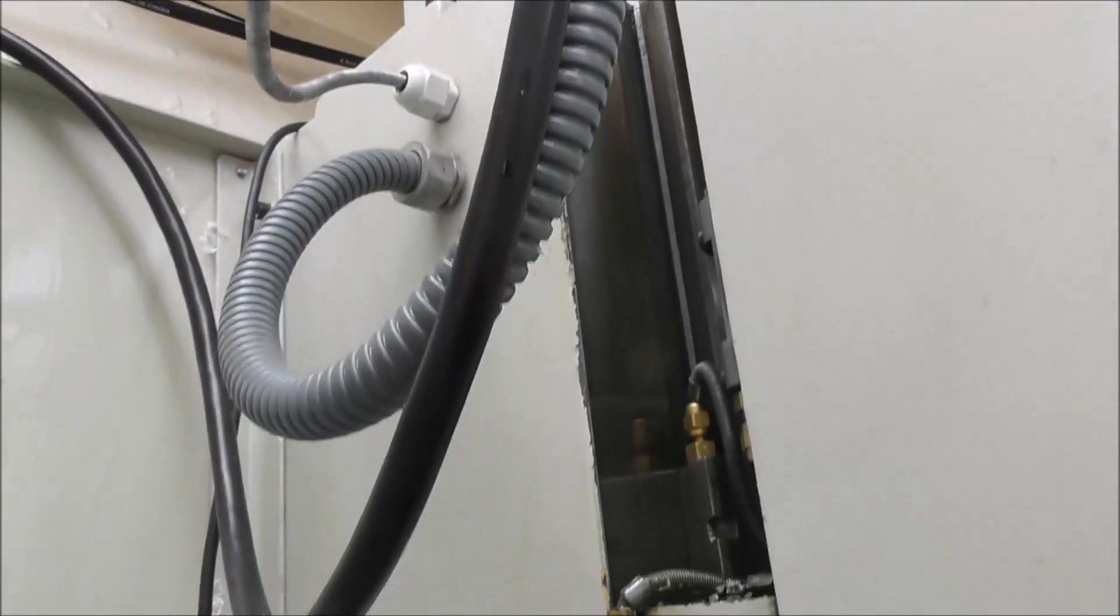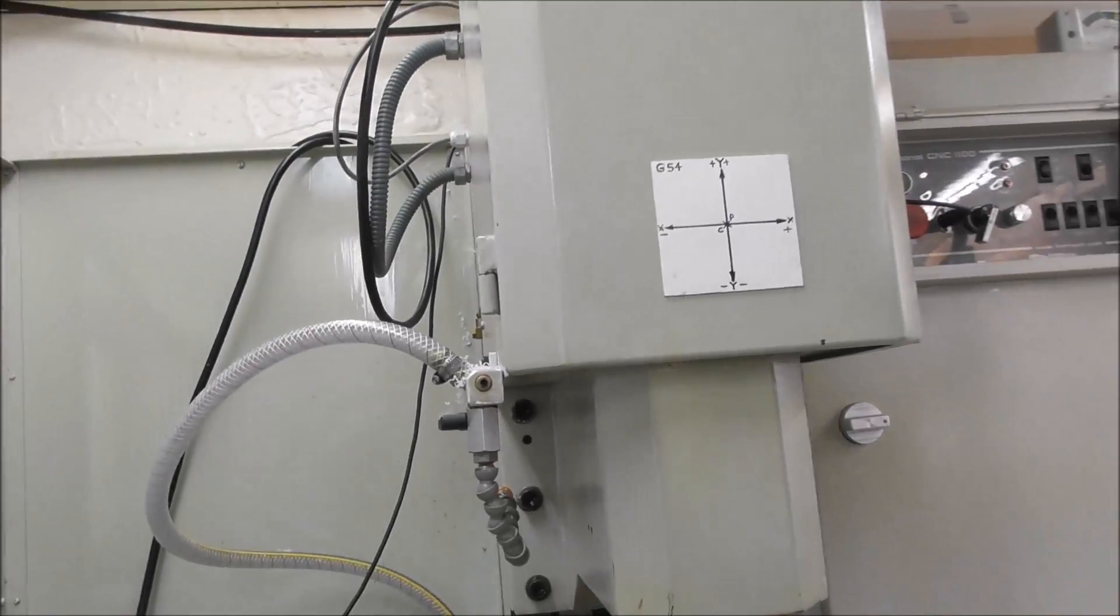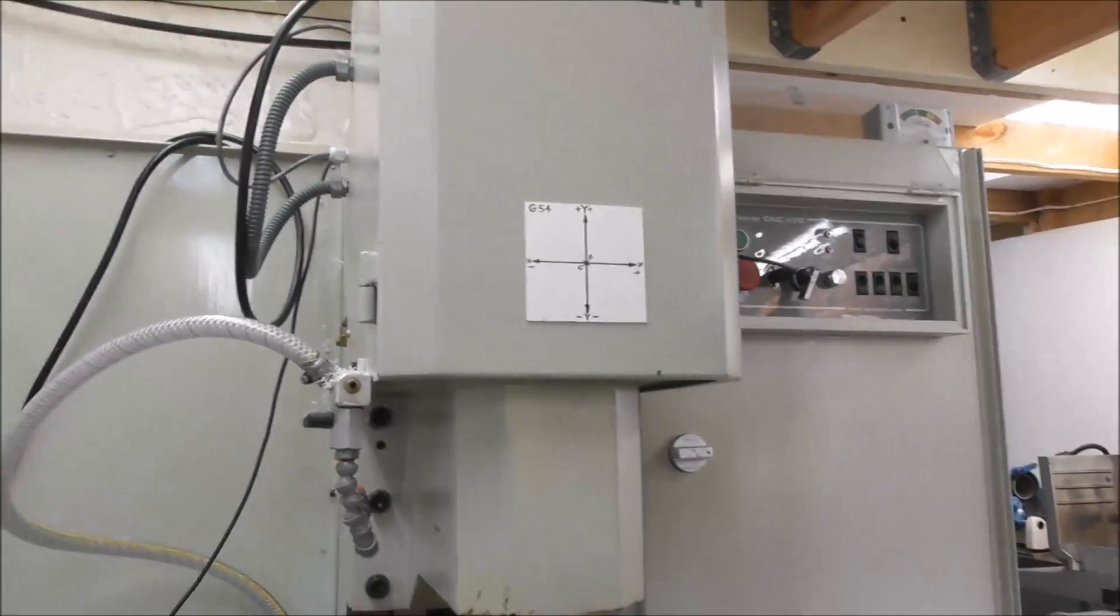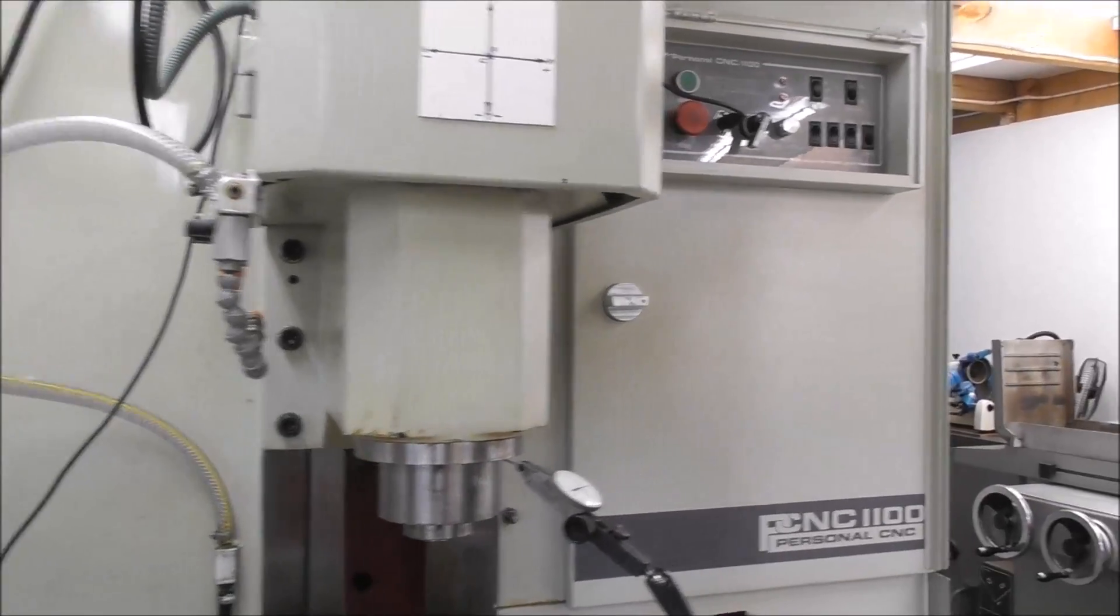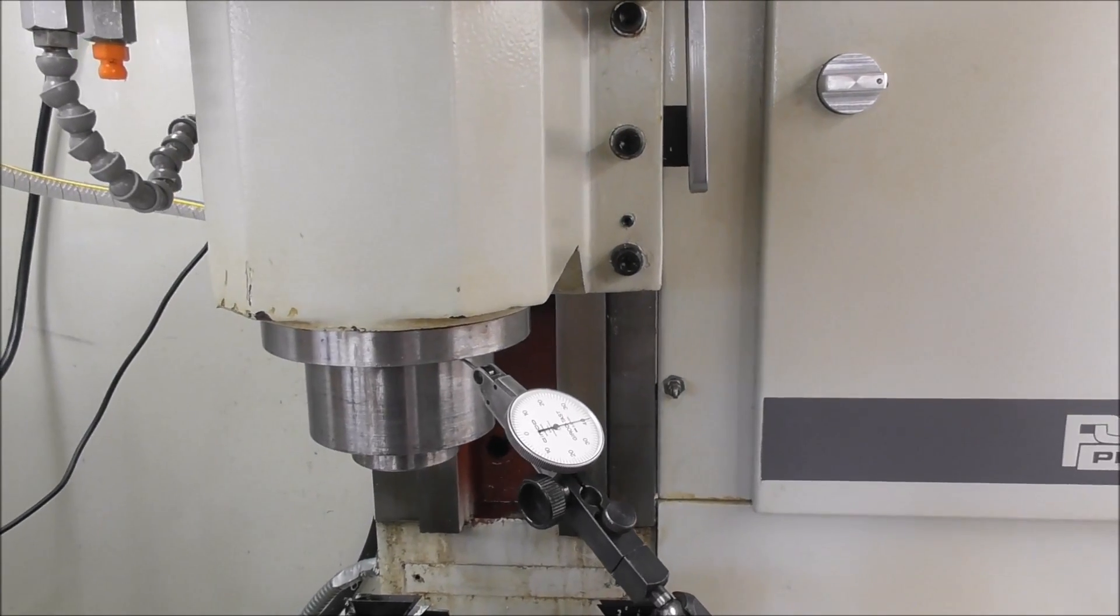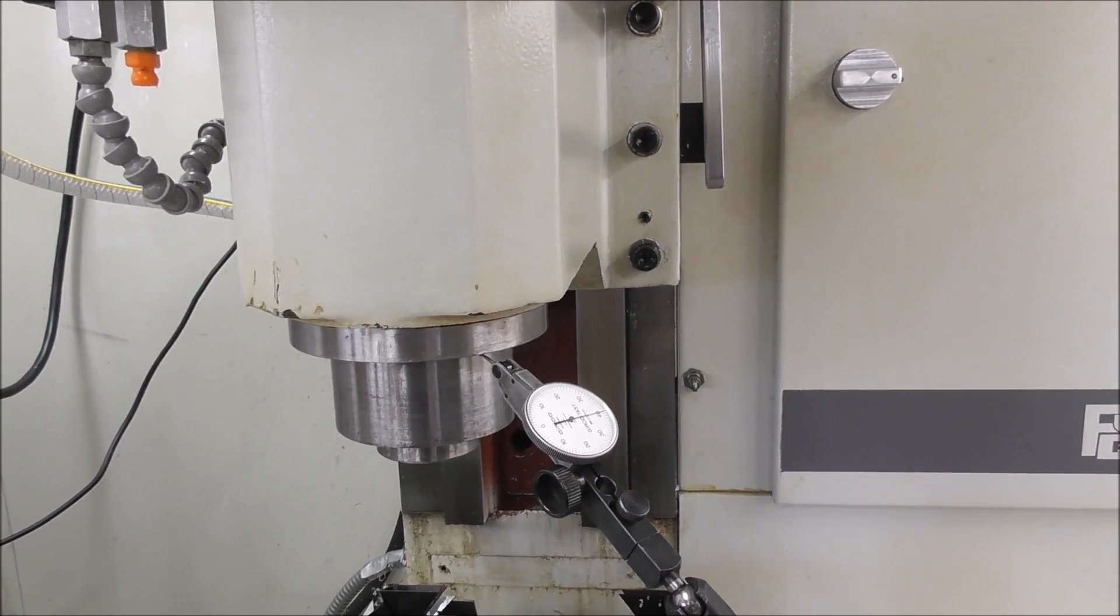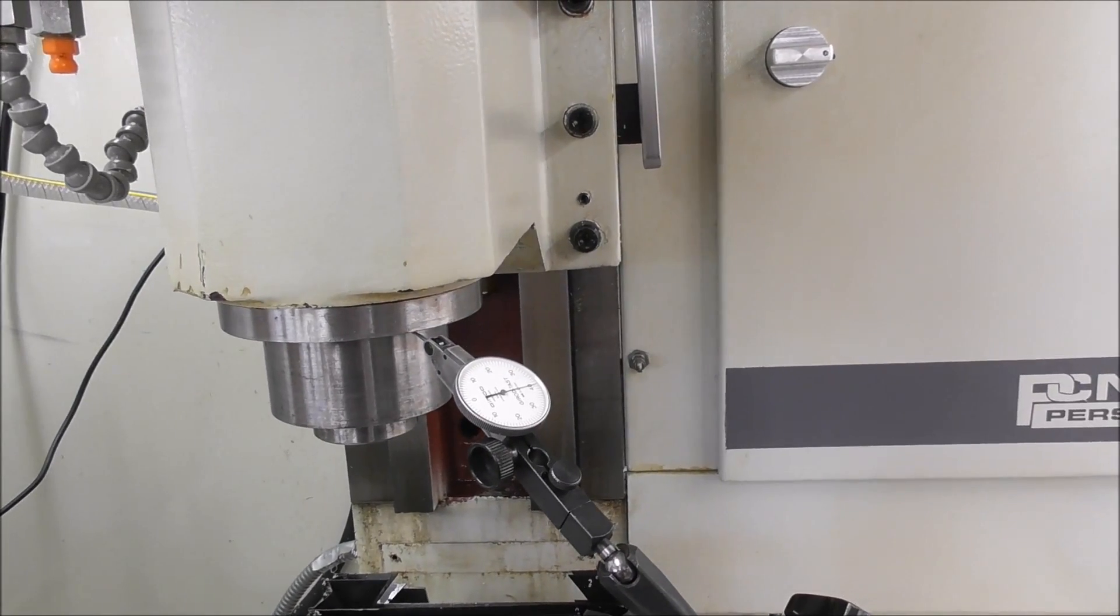The gib is tapered, obviously it's fatter at the top so you loosen the bottom adjusting screw one turn at a time and tighten the top adjusting screw until you get to the point where there's too much friction, there's too much grip.